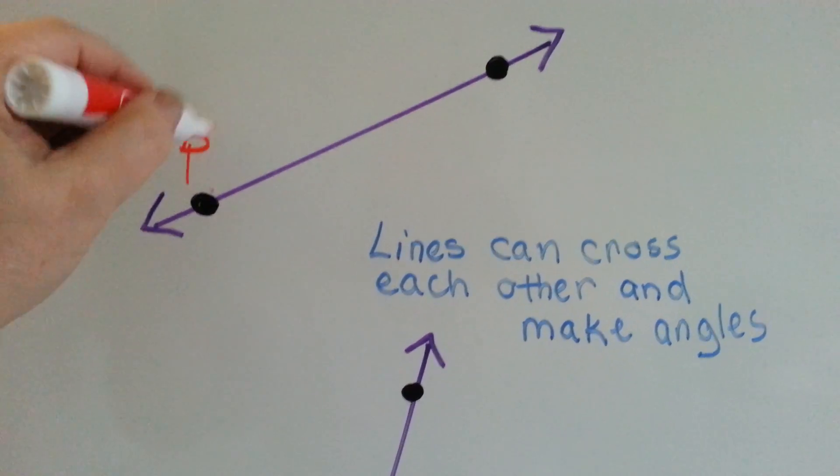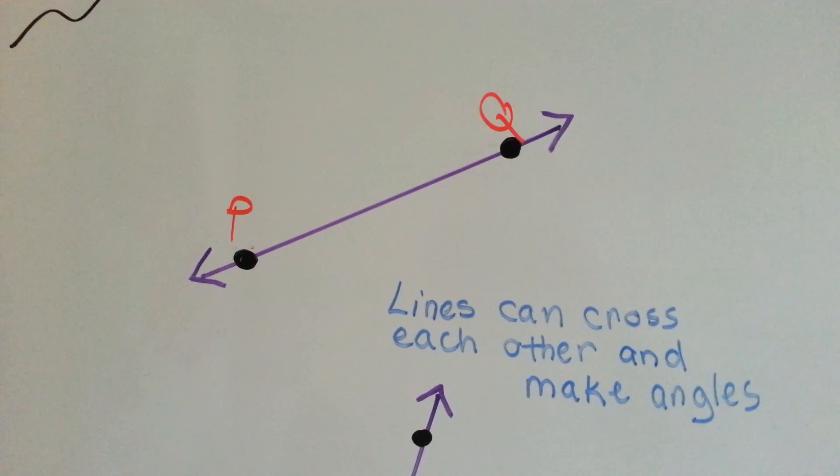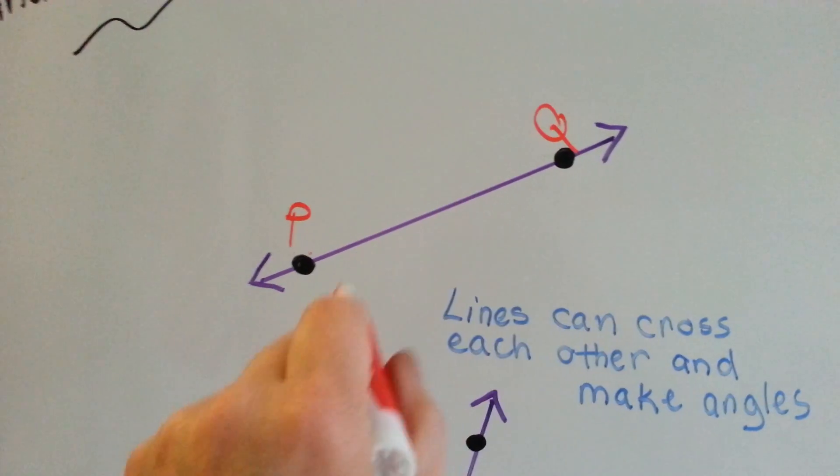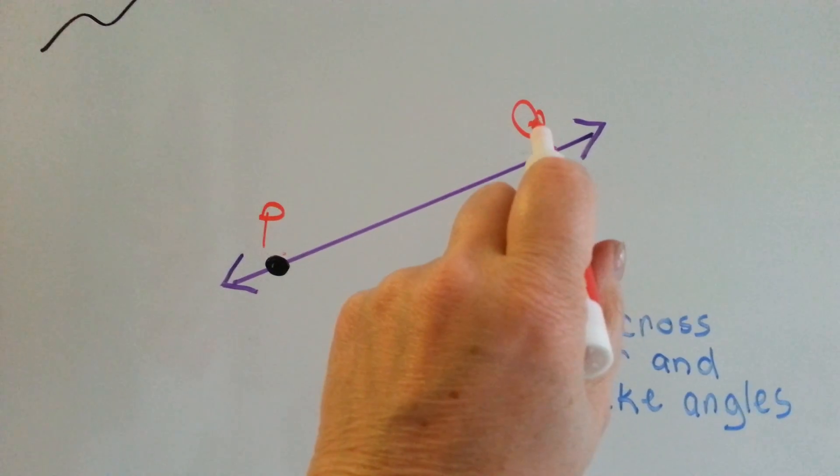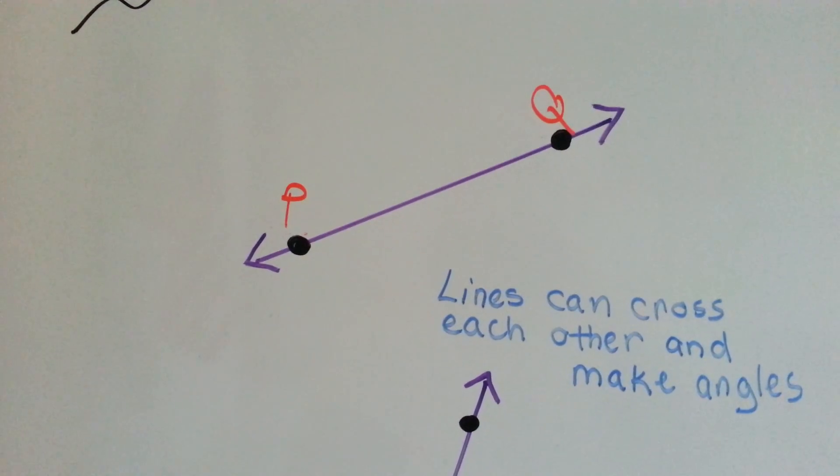We can call this P, Q. We could call it A, B. We could call it G, H, as long as they are in order. And we could also say it the other way around, backwards, Q, P, B, A, whatever.